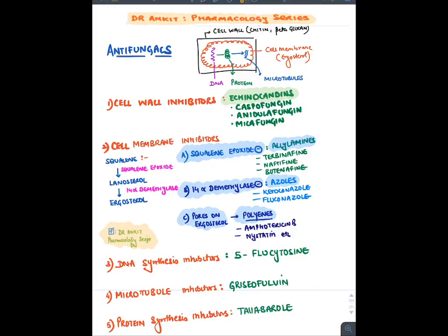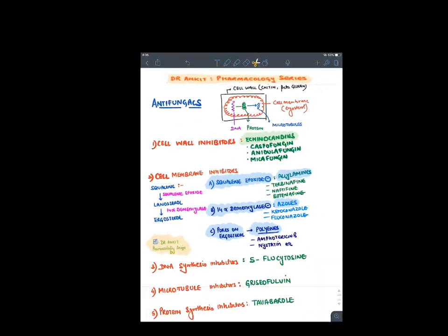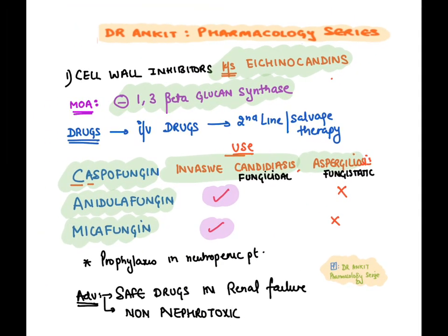Echinocandins inhibit 1,3-beta-glucan synthase, blocking fungal cell wall synthesis. They are intravenous, second-line salvage therapy drugs. Caspofungin is given for candidiasis and aspergillosis, while anidulafungin and micafungin are approved only for candidiasis. They are fungicidal for Candida but fungistatic for Aspergillus, and are used as prophylaxis in neutropenic patients.